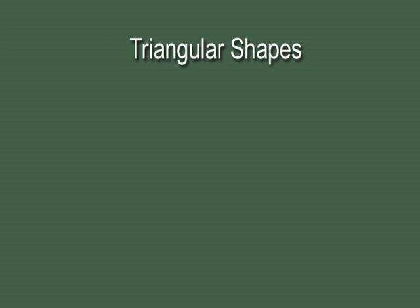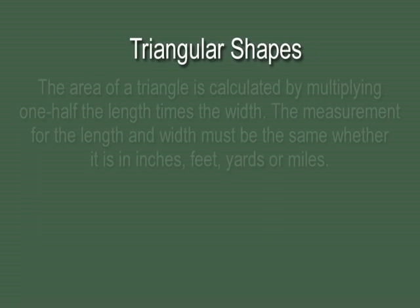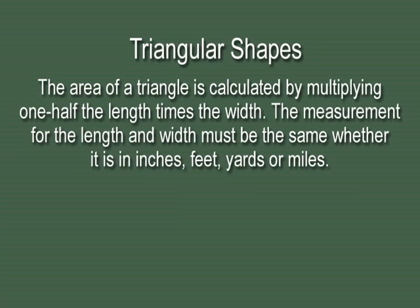Another shape that often comes up is the triangular shape. The area of a triangle is calculated by multiplying one-half the length times the width, and the measurements for both length and width must be the same whether you're using inches, feet, yards, or miles, just like we do with a rectangle.